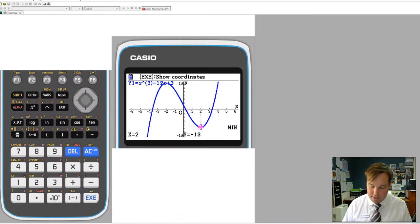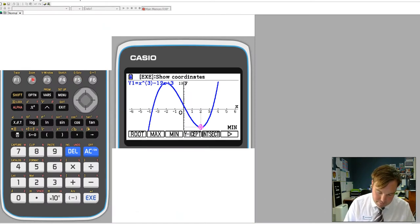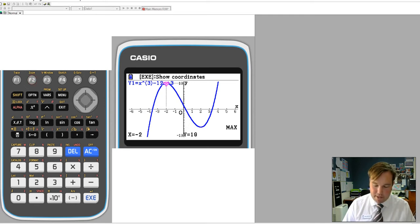Using your calculator you put in the equation, gsolve max will give you the maximum. So there is a maximum at minus 2, 19, gsolve min will give us that 2, negative 13. So we can do this using our calculator already, but now using algebra.